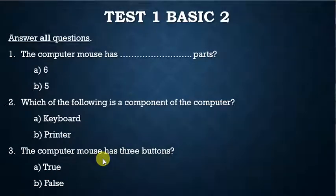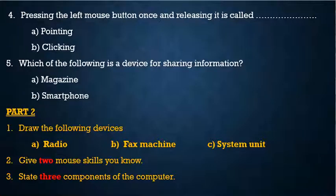Then question three: the computer mouse has three buttons. a) true, b) false. Then we have question four: pressing the left mouse button once and releasing it is called a) pointing, b) clicking.